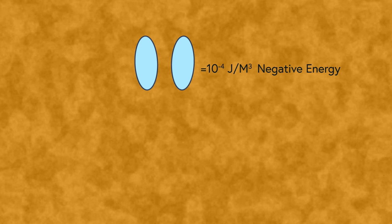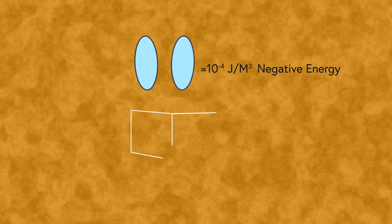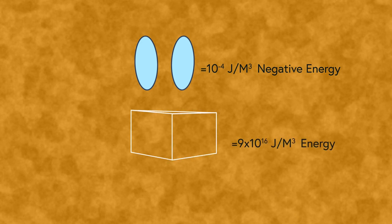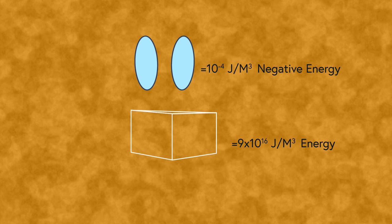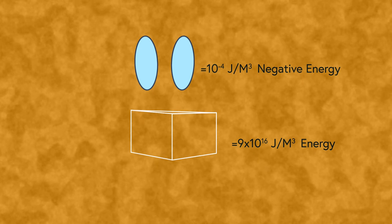In order to understand just how minuscule this amount is, a 1 kilogram mass in the same volume of space has an energy density of roughly 9 times 10 to the 16 joules per meter cubed. Quite disappointing indeed. This doesn't mean all is lost, as there is another potential way.